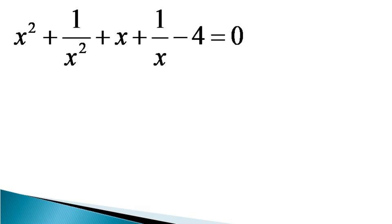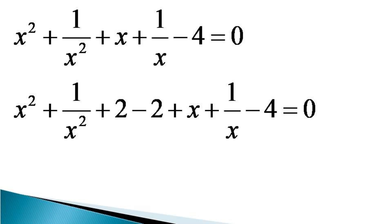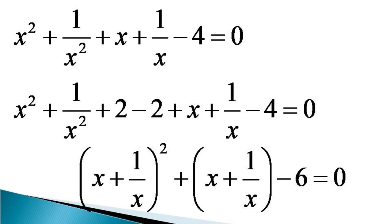Now, 2 is added and subtracted in the first two terms to get the equation as x squared plus 1/x squared plus 2 minus 2 plus x plus 1/x minus 4 equals 0. It can be observed that the first three terms represent (x plus 1/x) whole squared. So the equation can be represented as (x plus 1/x) squared plus (x plus 1/x) minus 6 equals 0. The minus 6 comes by adding minus 4 and minus 2.